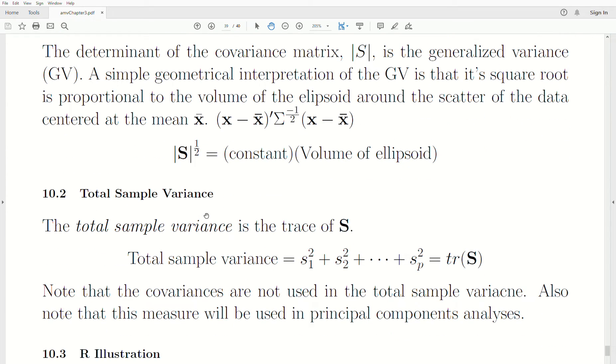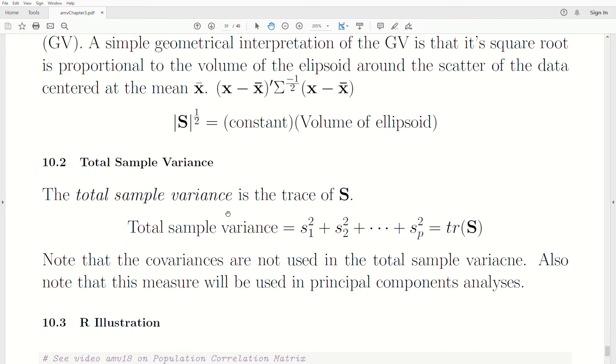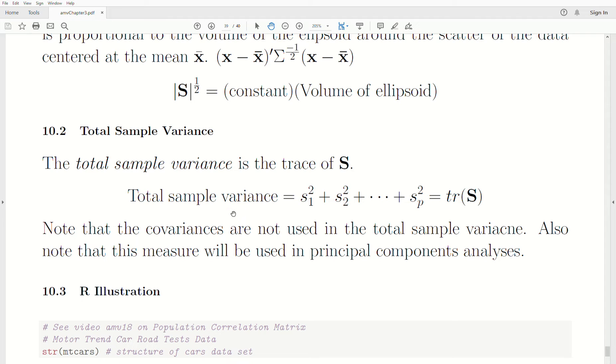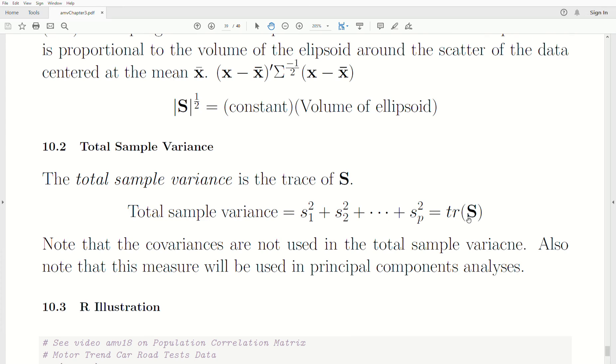Now, the total sample variance is the trace of the sample covariance matrix. As you remember, the trace is the sum of the diagonal elements. So, the total sample variance is you add up all the variances, which is actually the trace of this sample covariance matrix. It's the diagonals added up. One knock against this is that it doesn't incorporate the covariances to describe this overall variance of our data.